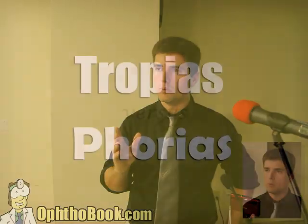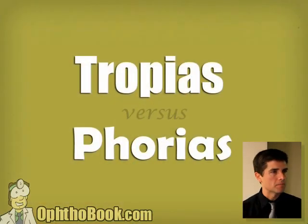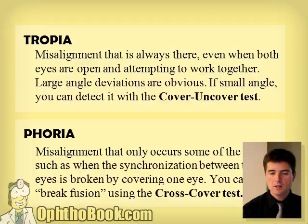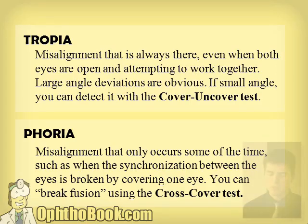There's really only one goal with this entire lecture, and that goal is to figure out what's the difference between a tropia and a phoria. A tropia is a misalignment between the eyes — it's always there. It may be obvious or it may not be obvious, but a phoria is something quite a bit more subtle.